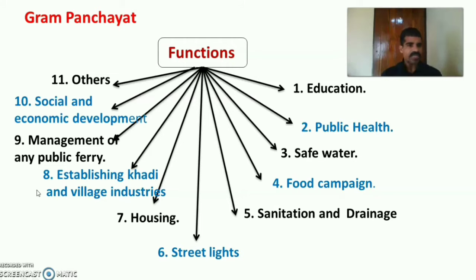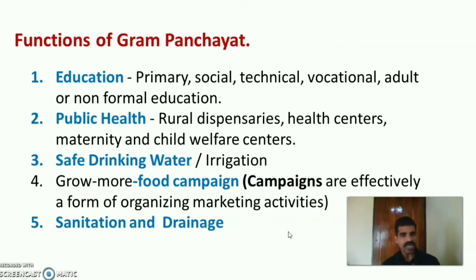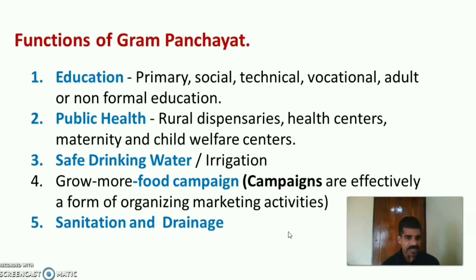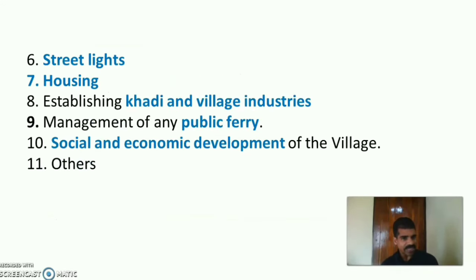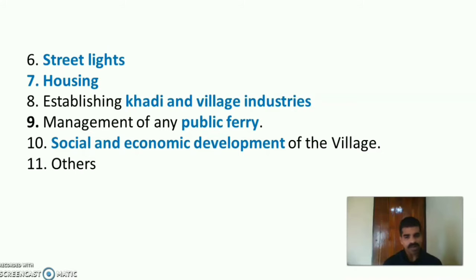In detail: First, education — that is primary, social, technical, vocational, adult education and non-formal education. Second, public health — render public health services through rural dispensaries, various health centers, sub-centers, primary centers, and maternity and child welfare centers. Third, safe drinking water and irrigation. Fourth, grow more food campaigns. Fifth, sanitation and drainage. Sixth, maintenance of street lights. Seventh, housing. Eighth, establishing khadi and village industries. Ninth, management of any public ferry. Tenth, social and economic development — planning and implementing various programs for the social and economic development of the village.